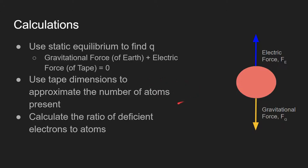Tape dimensions were also used to find the number of atoms on a piece of tape, and this was used to find the ratio of deficient electrons to atoms.